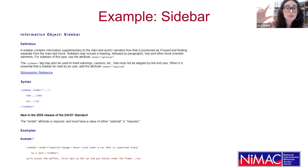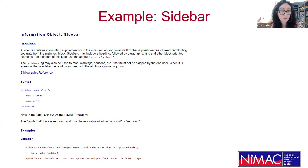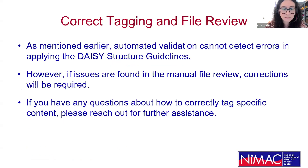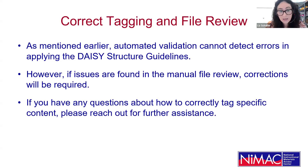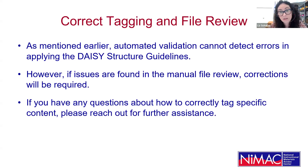You can see the definition of sidebar, the syntax showing how the tags should be used and what can be nested within them, and then usually a couple of examples of how you might tag a sidebar or whatever information object you're looking at. Automated validation can't detect everything, so if issues are found in the manual file review, we will require corrections to be made. If you have any questions about how to correctly tag specific content, please don't hesitate to reach out. When we provide feedback, we will typically link to the relevant sections of the DAISY structure guidelines.